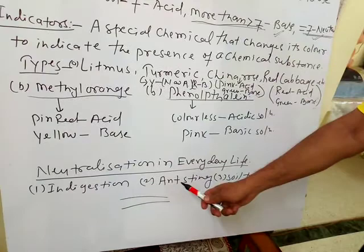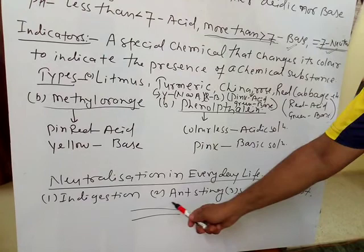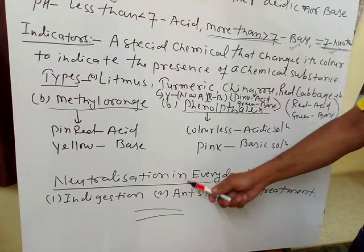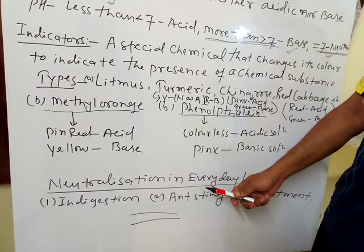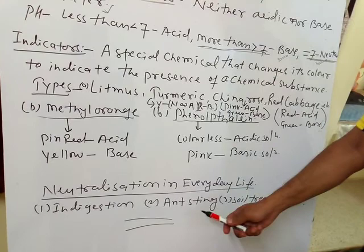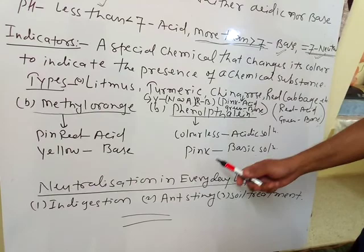The second use of the neutralization process in daily life is ant sting. When an ant bites us, it releases acid — formic acid — into our skin, which causes burning and pain. At that time, we apply a base like calamine solution or a hydroxide solution to that place, the skin becomes neutral, and we get relief from the pain.